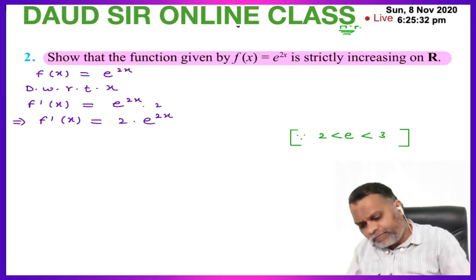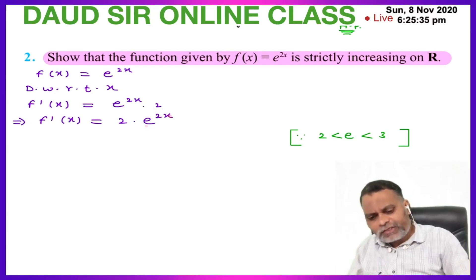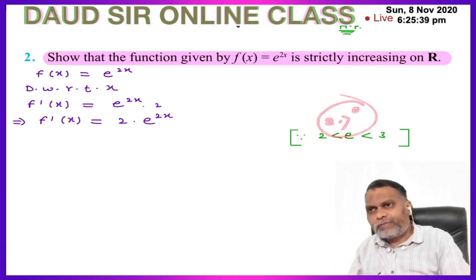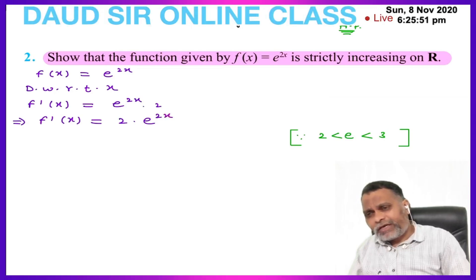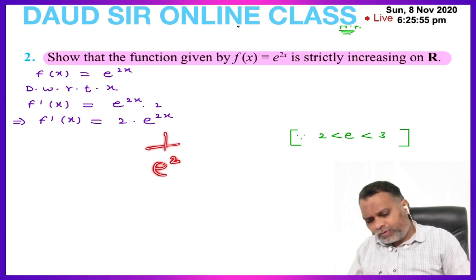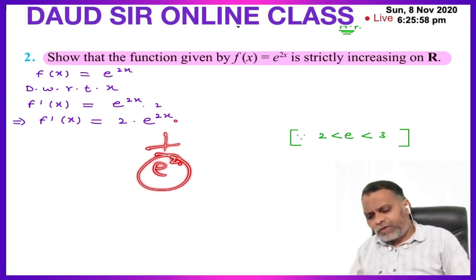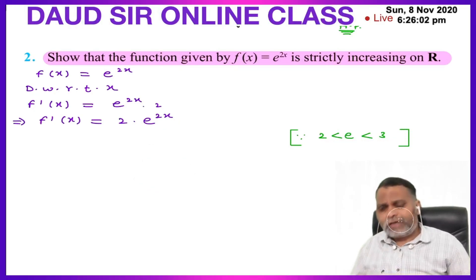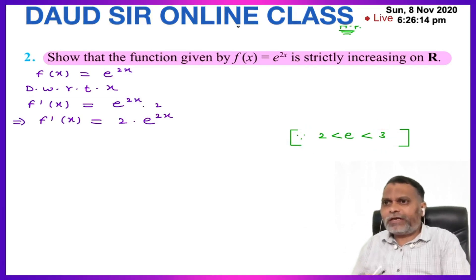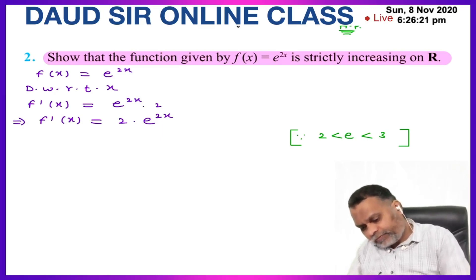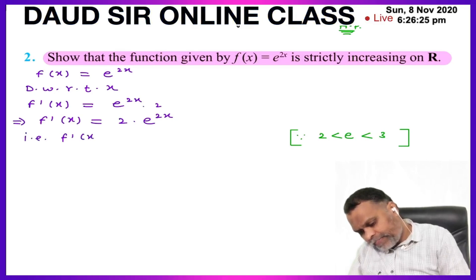If we put any negative value, like minus one, to make the negative value positive, we write it as one upon e^2. When you solve and divide, you still get a positive value. For any real value of x, the value will be greater than zero. Both factors are positive, so their product is also greater than zero. The value of e is between 2 and 3, so it always gives a positive value for all real x. Therefore, f'(x) > 0.